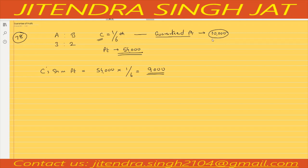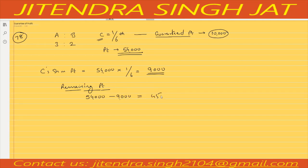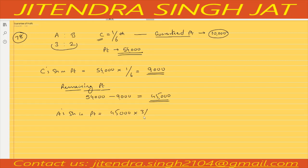Remaining profit after giving profit to C is 54,000 minus 9,000, so 45,000 is remaining. A and B will get this 45,000 in the ratio 3 to 2. So A's share is 45,000 multiplied by 3/5 and B's share is 45,000 multiplied by 2/5.